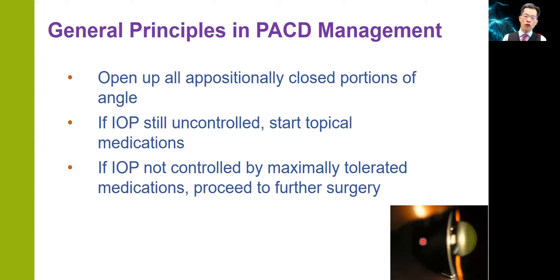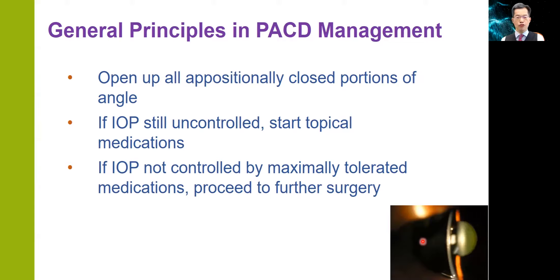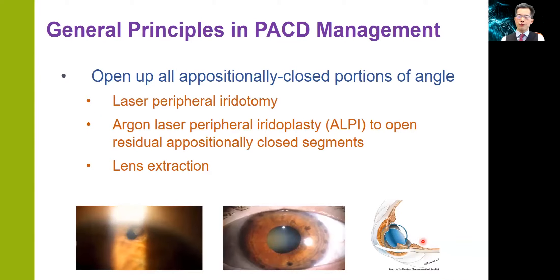In the management of primary angle closure disease, there are three important steps. In the first step, we try to open up all appositionally closed portions of the angle as far as we can. If the intraocular pressure is still uncontrolled, then we start topical medications. And if IOP is still not controlled by maximally tolerated medications, then we consider proceeding to further surgery. There are at least three ways we can use to open up appositionally closed portions of the angle, and these include laser peripheral iridotomy, argon laser peripheral iridoplasty (ALPI), to open up residual appositionally closed segments of the angle after iridotomy, and also lens extraction.